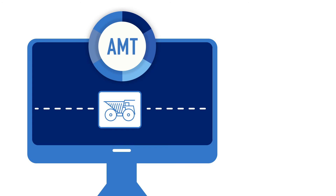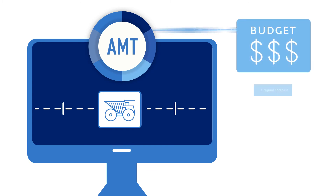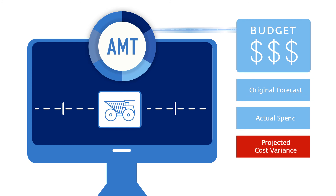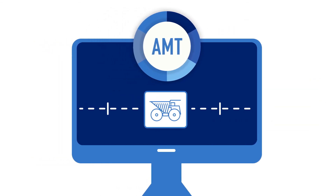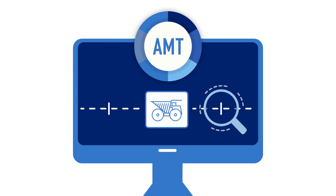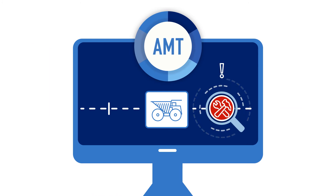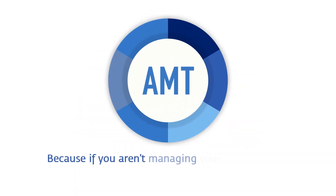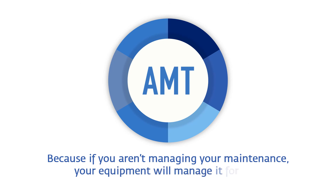AMT lets you understand at any point of the equipment's life how you are tracking against the budget and the strategy. AMT will also predict what is still to come. The ability to see future risks and opportunities with DLCC drives targeted actions today, resulting in optimal asset performance operationally and financially throughout an asset's life cycle. Because if you aren't managing your maintenance, your equipment will manage it for you.